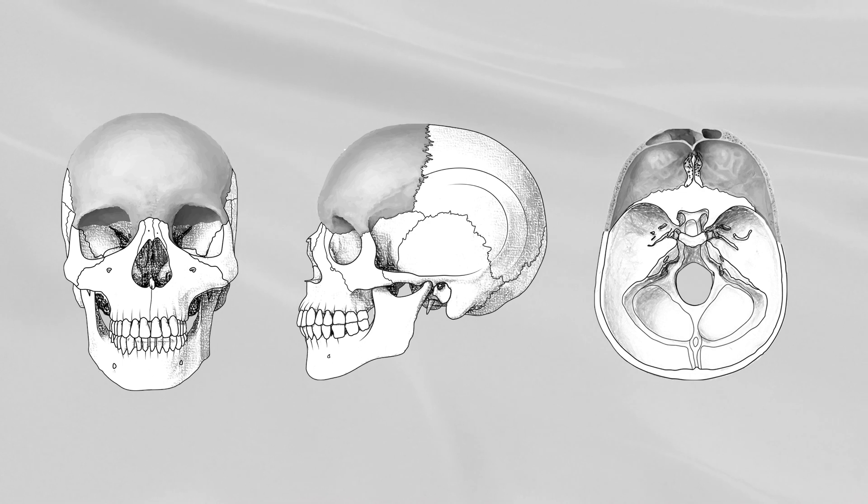The frontal bone is an unpaired bone of the skull which consists of two parts: the vertically oriented squamous part, or squama, corresponding with the forehead region, and the horizontally oriented orbital part, which forms the roofs of the orbits.